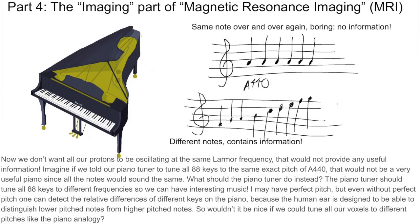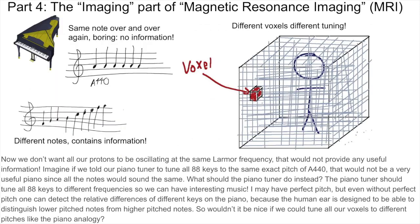Now, we don't want all our protons to be oscillating at the same Larmor frequency — that would not provide any useful information. Imagine if we told our piano tuner to tune all 88 keys to the same exact pitch of A440. That would not be a very useful piano since all the notes would sound the same. What should the piano tuner do instead? The piano tuner should tune all 88 keys to different frequencies so we can have interesting music. One can detect the relative differences of different keys on the piano because the human ear is designed to distinguish lower pitched notes from higher pitched notes.